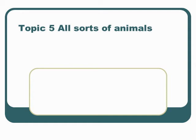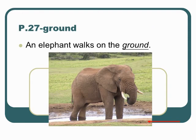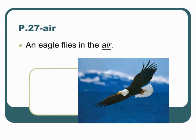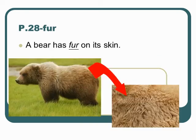Topic 5: All sorts of animals. Page 27. An elephant walks on the ground. Page 27. Water: A shark swims in water. Page 27. Air: An eagle flies in the air. Page 28.